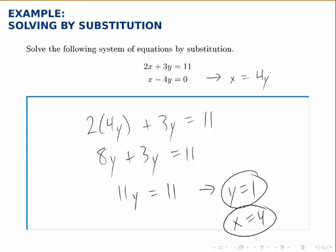Either way though, we get this combination. So the solution is the point (4, 1). That's the point where the two lines cross.